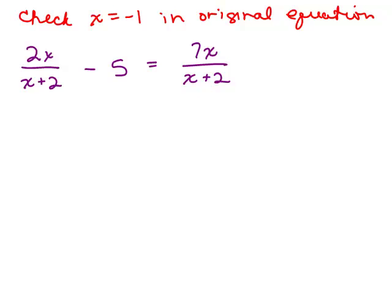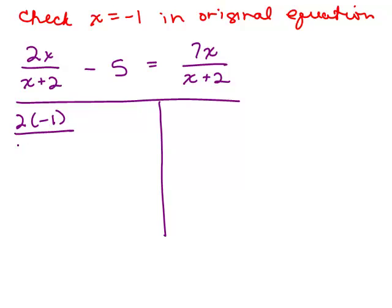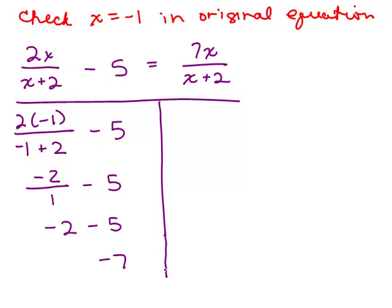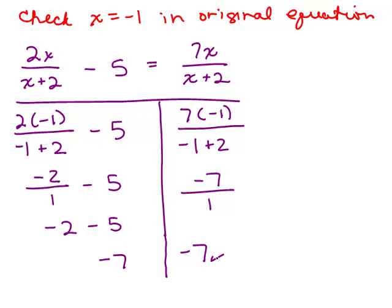Checking x equals negative 1 in the original equation. On the left side: 2 times negative 1 over (negative 1 plus 2) gives negative 2 over 1, which is negative 2. Then negative 2 minus 5 equals negative 7. On the right side: 7 times negative 1 over (negative 1 plus 2) gives negative 7 over 1, which is negative 7. Both sides equal negative 7, so x equals negative 1 checks out — that's the answer.